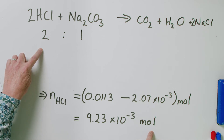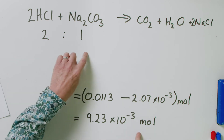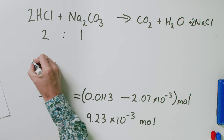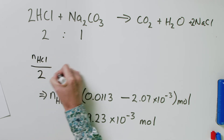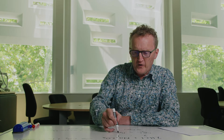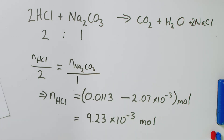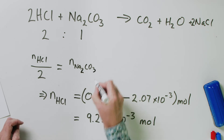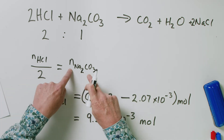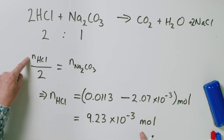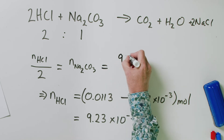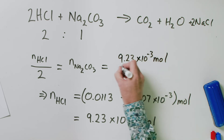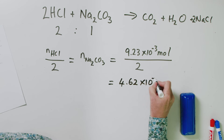Using that two-to-one ratio: moles of HCl / 2 = moles of Na₂CO₃. So moles of sodium carbonate = 9.23 × 10⁻³ / 2 = 4.62 × 10⁻³ mol. We're very close now — we've got the moles of sodium carbonate that was in the mixture.